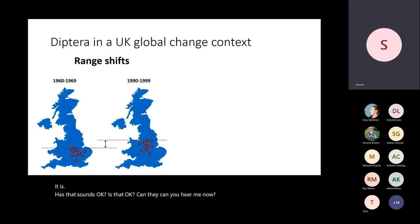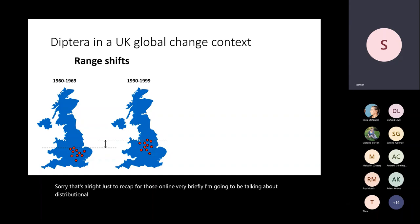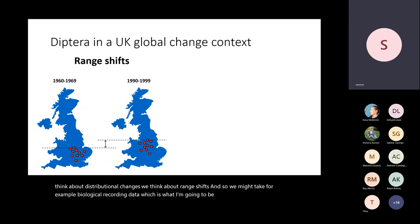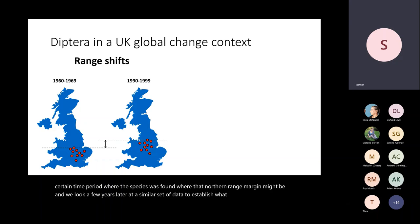Just to recap for those online: I'm going to be talking about distributional and phenological changes. When we think about distributional changes, we think about range shifts. We might take biological recording data — which is what I'm using today — and look in a certain time period at where a species was found, where that northern range margin might be, and then look a few years later to establish what that range shift has been. So we're looking for the change in the northern range margin.